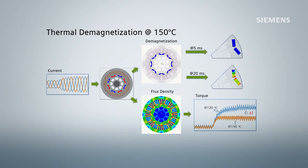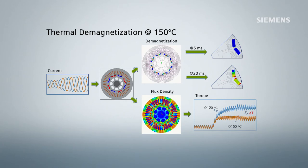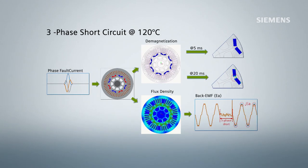We can also analyze demagnetization due to higher operating temperatures. Combined with overload conditions, this can result in substantial loss in magnetization. We can study fault conditions and check demagnetization under these conditions.